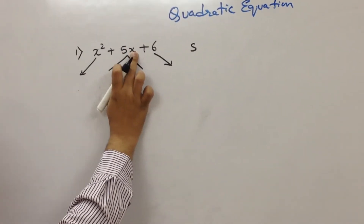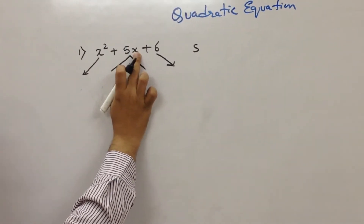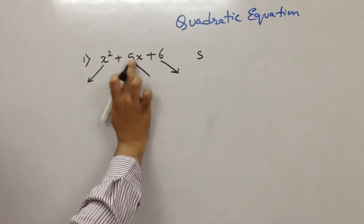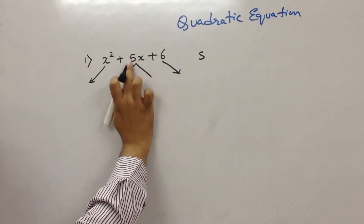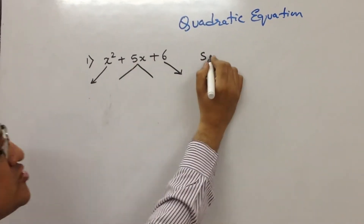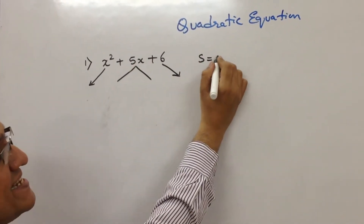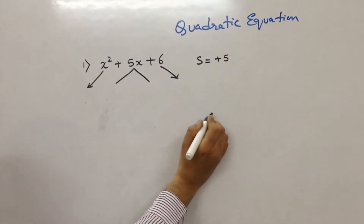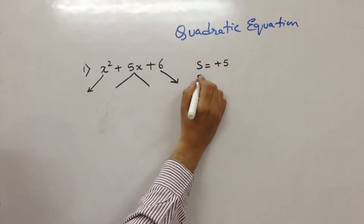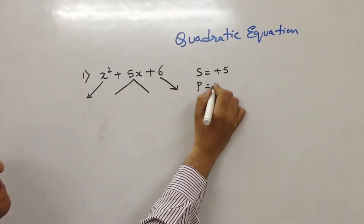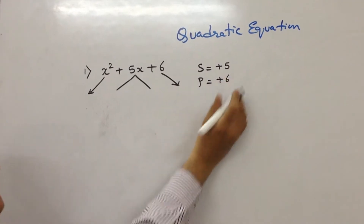the sum should be the middle term. The coefficient of the middle term should act as sum. So here, the coefficient is plus 5. So I shall say sum should be plus 5. And product should be the last constant term, which is plus 6.